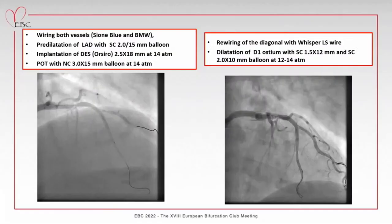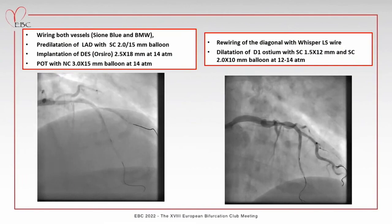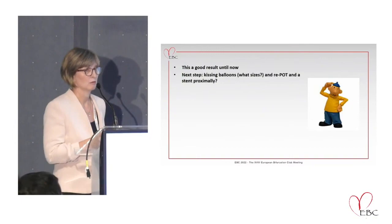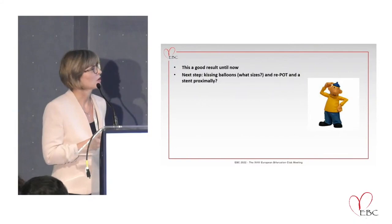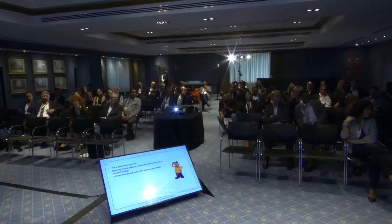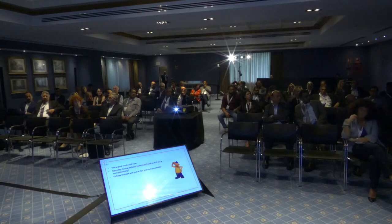After this POT I thought it was a nice result. What would you do now - kissing balloons then a proximal stent, or just be satisfied and do a rePOT with a proximal stent? The panelists were asked for comments. Was the result in the side branch good? There was no dissection, no more than 70% stenosis.